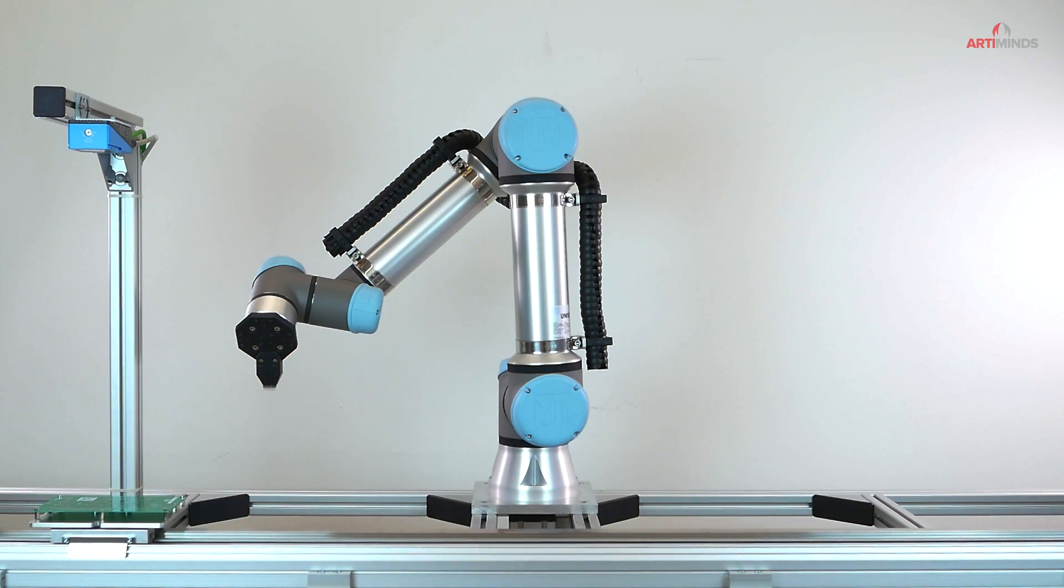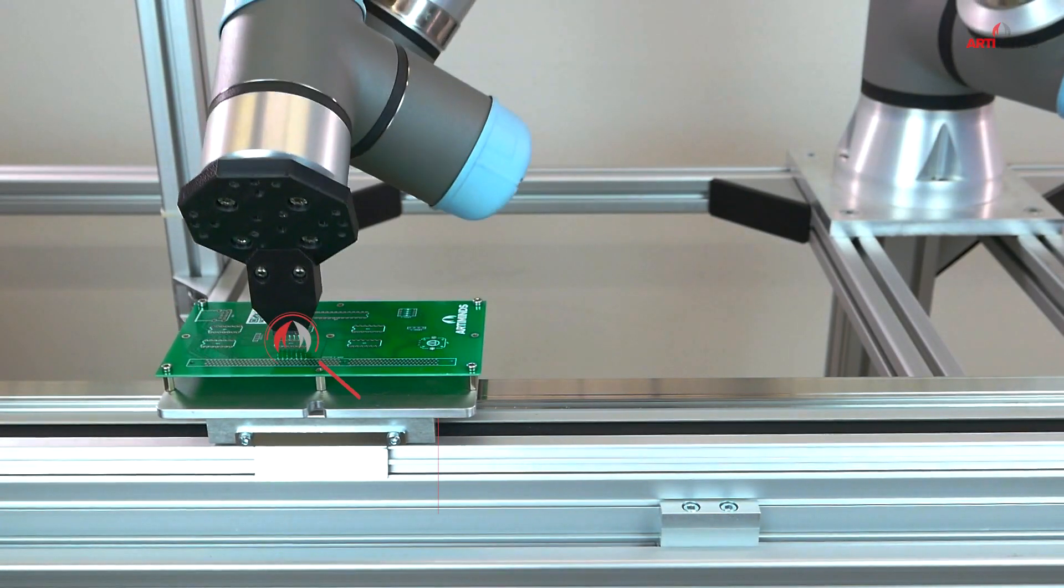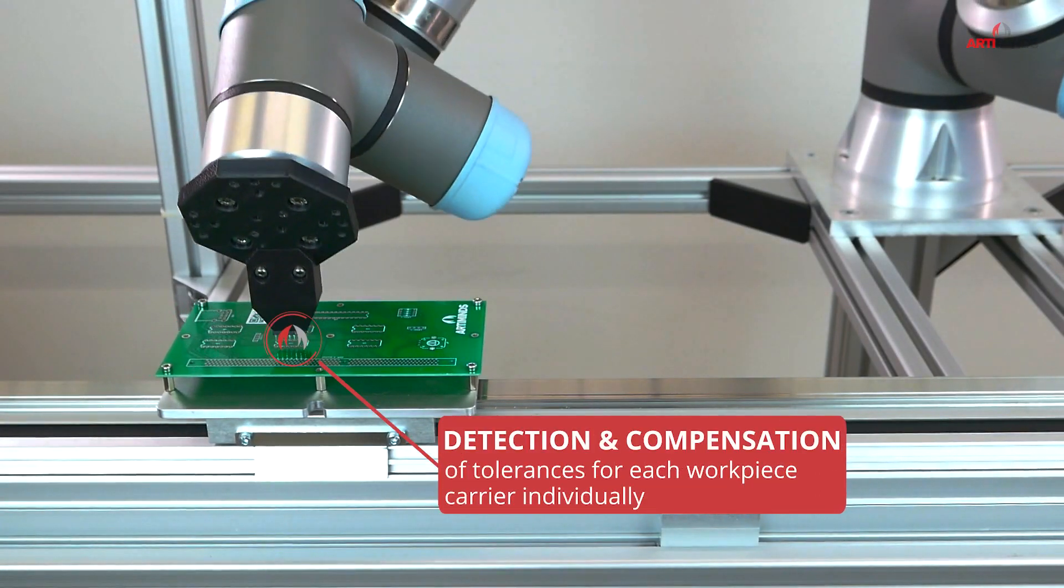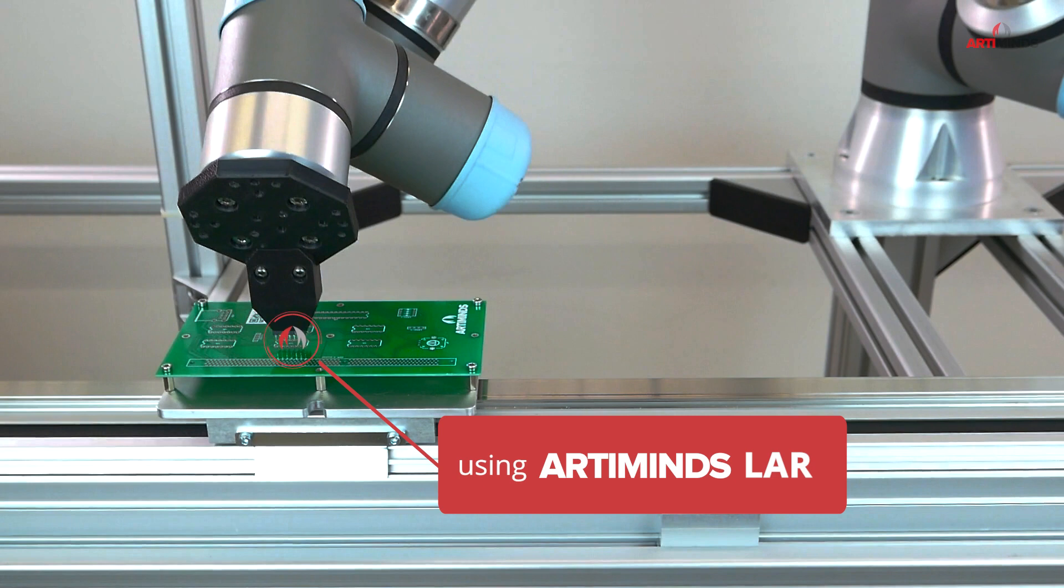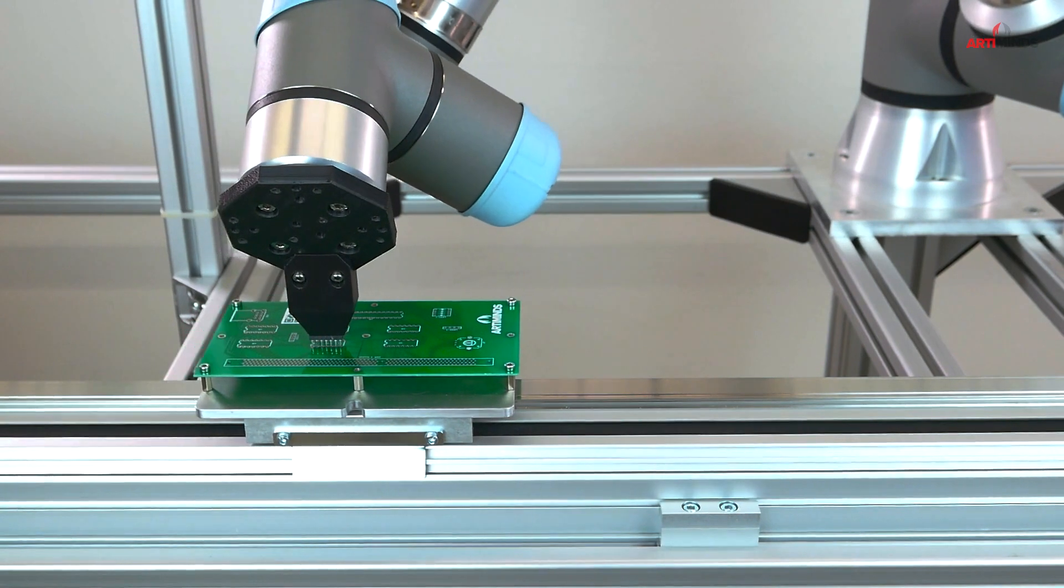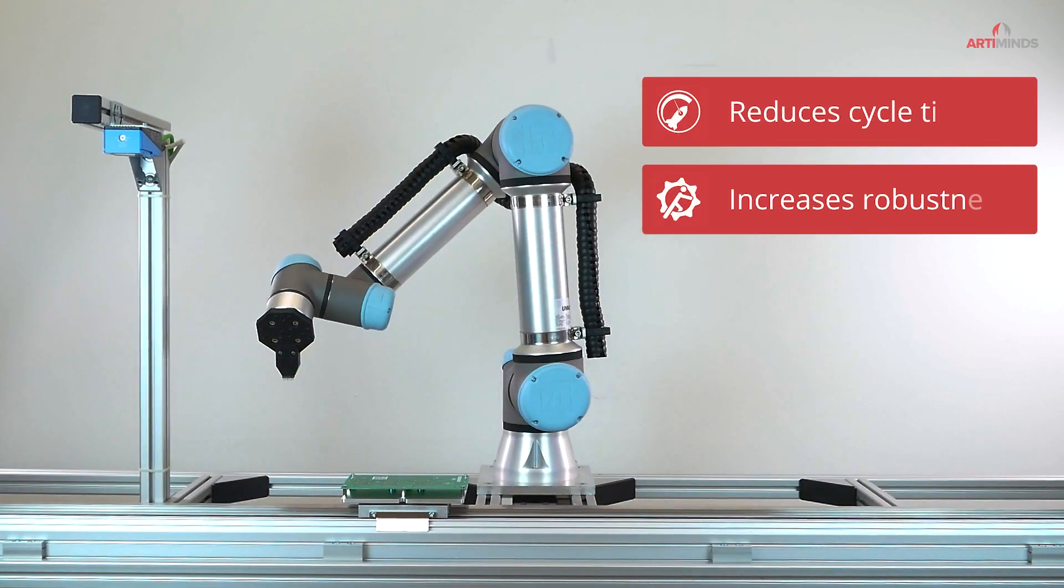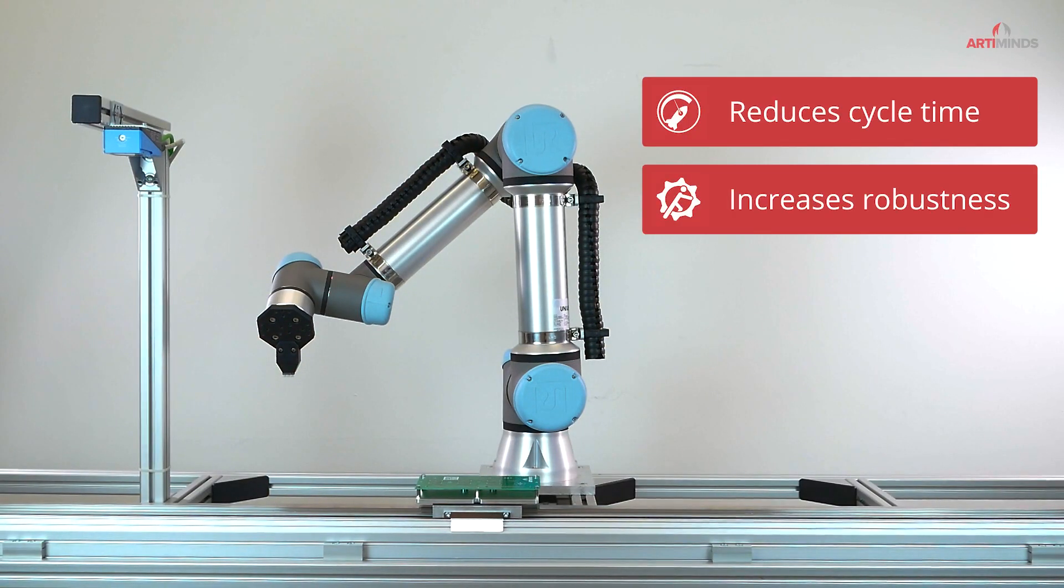This video presents a solution how you can detect and compensate tolerances individually for each workpiece carrier using ArtiMinds Robot Programming Suite in combination with ArtiMinds Learning and Analytics for Robots. This helps to reduce the cycle time of your robot programs while also making them more robust.